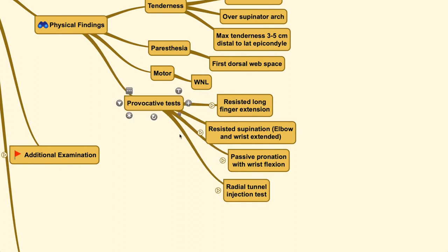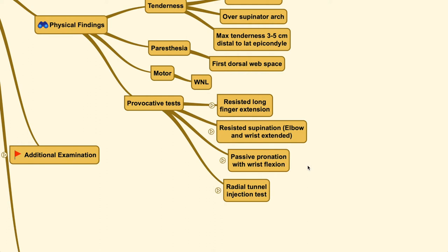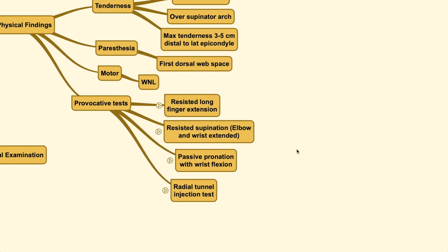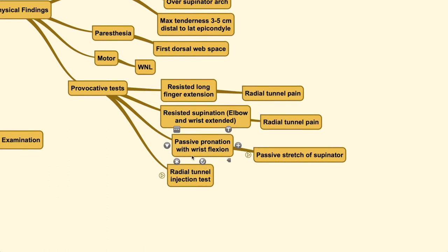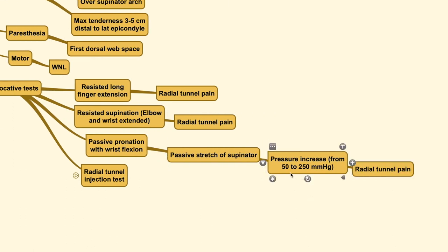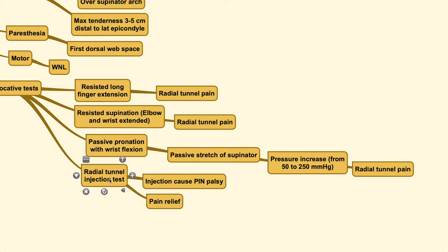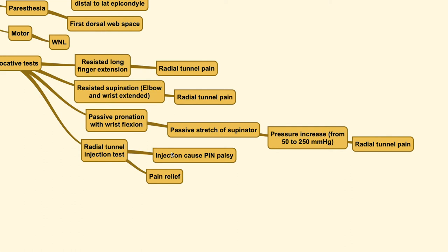The next thing you can do to confirm your diagnosis is the provocative test. The way to provoke radial tunnel syndrome is by activating the muscles that form the borders of the radial tunnel itself. The first would be resisted long finger extension. You could also do resisted supination, because the supinator is also one of the muscle borders. You could also do passive pronation with wrist flexion — this passively stretches the supinator, and due to that motion, you can increase the pressure from 50 up to 250. The last would be the radial tunnel injection test.